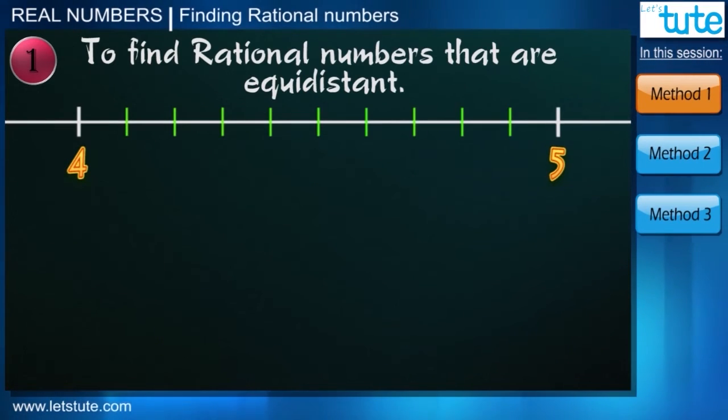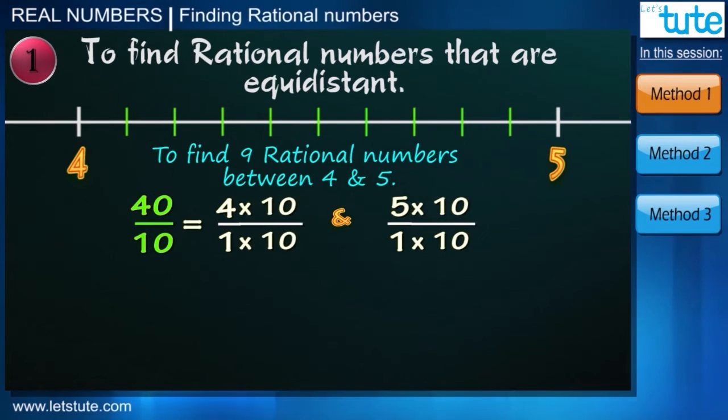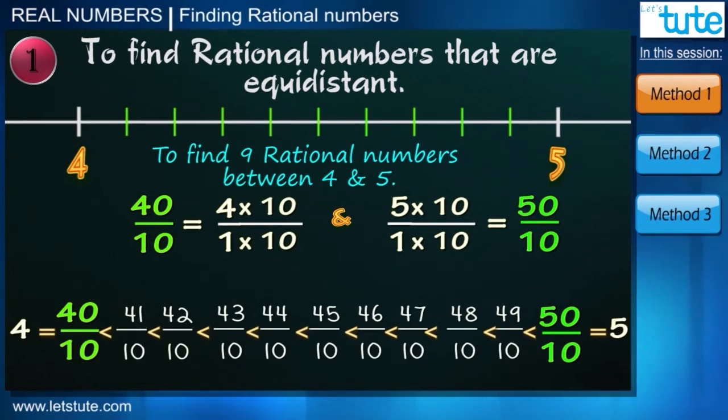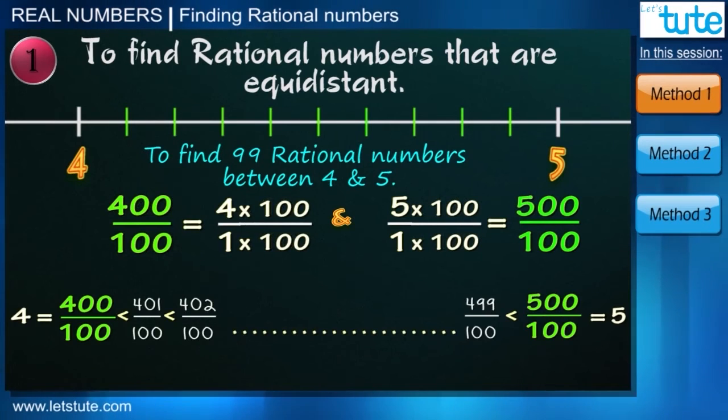Same way, if we want to find nine rational numbers then we multiply the numerator and denominator of 4 and 5 by 9 plus 1 that is 10. Denominator is same now, so we again write numerator in increasing order. And these are the nine rational numbers between 4 and 5. Note that when we multiply by 100 then we would get 99 numbers between 4 and 5. And like this we can find infinite rational numbers between any two numbers.